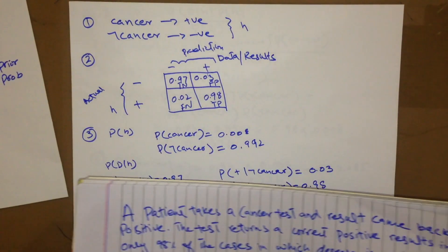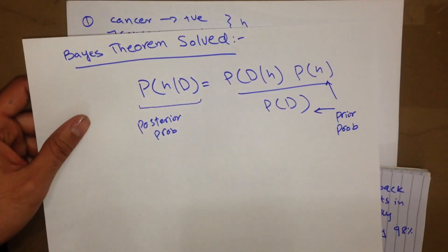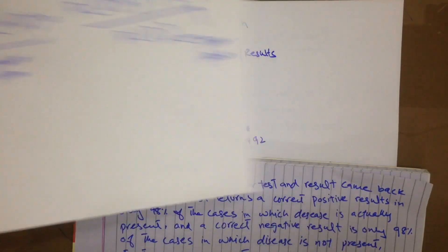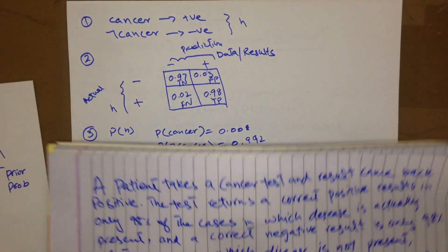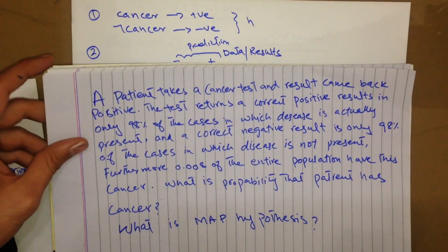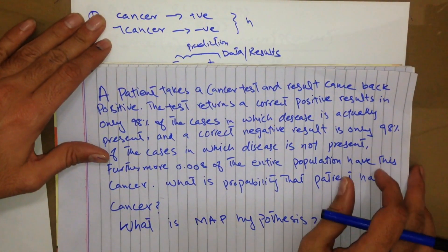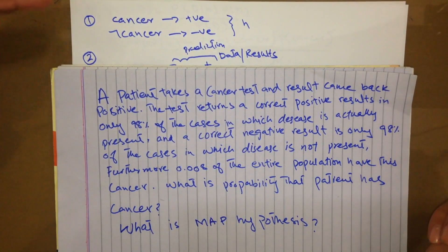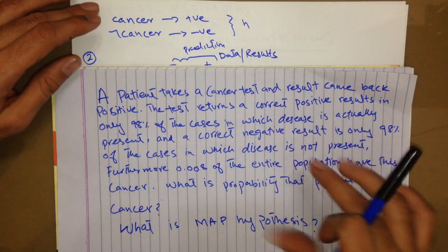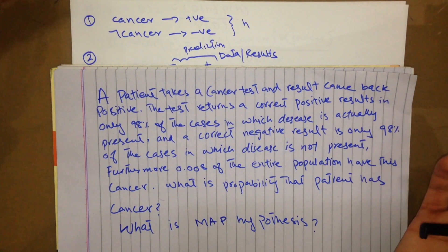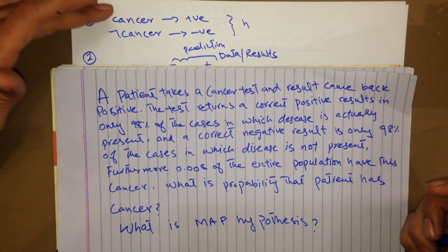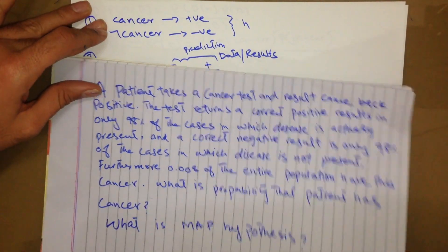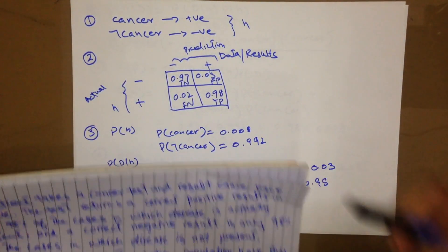Looking at the formula, in order to find out P(H|D) we need P(D|H), P(H), and P(D). Based upon the question, we have to do it step by step. First we need to find out what the basic classes and hypothesis are. There are two types of classes: the patient has cancer or has not cancer. Has cancer is going to be positive, and does not have cancer is going to be negative.